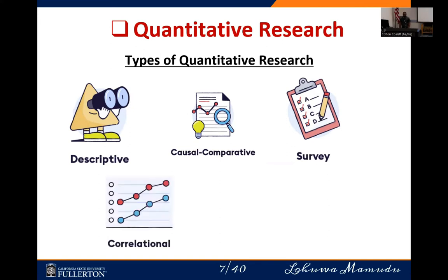Then we have correlational quantitative research. Correlation comes from relationship, so this research looks at establishing relationships between variables. You might have a number of independent variables and want to know if there's any relationship between them. For instance, if you look at high blood pressure and blood sugar or glucose level, you might want to know if there's a relationship. You can also establish correlation between a dependent variable and other independent variables.